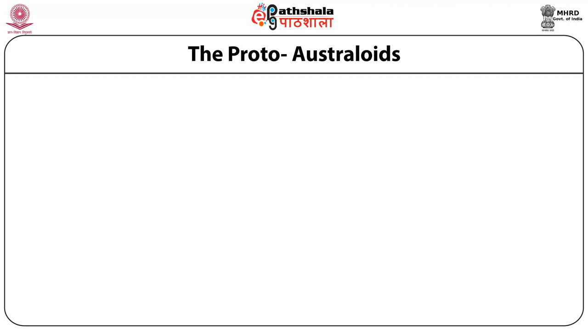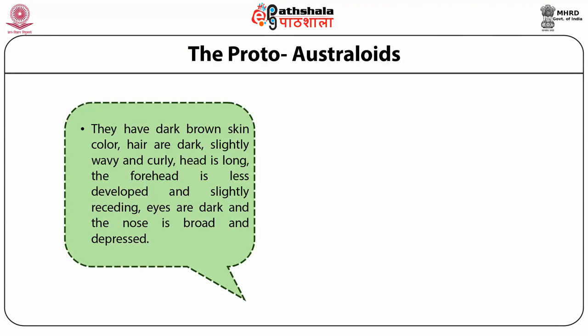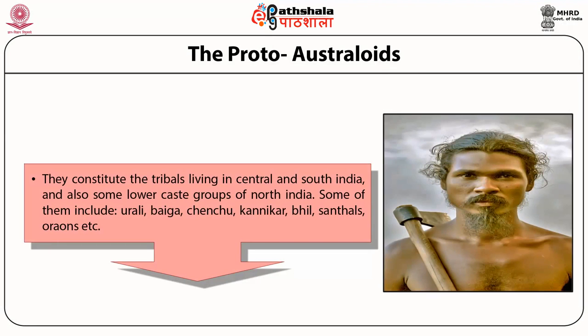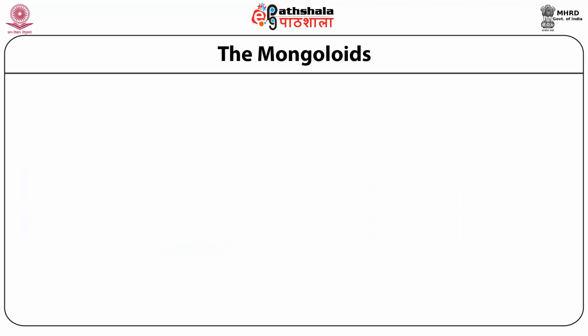The Proto-Australoids have dark brown skin color, dark and slightly wavy and curly hair, long head and less developed and slightly receding forehead, dark eyes and broad and depressed nose. The Proto-Australoids are supposed to have arrived soon after the Negritos in India. They constitute the tribals living in Central and South India and also some lower caste groups of North India.